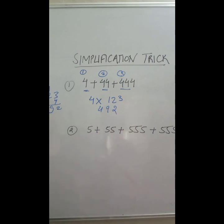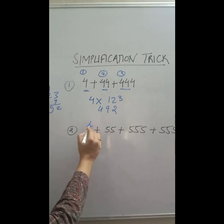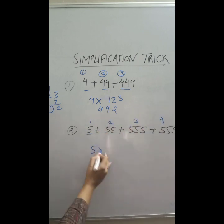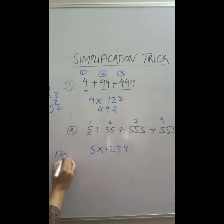Now if you talk about here, simple 5, then here it's 1, 2, 3, and 4. So what is the trick? 5 into 1, 2, 3, 4. Just multiply here. 5 into 4 is 20, 5, 3, 16, 17, and this is going to be 6170.